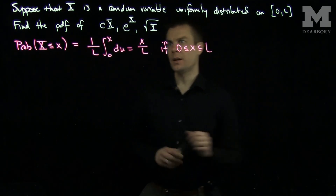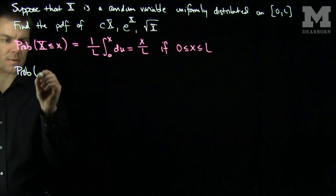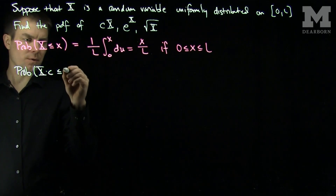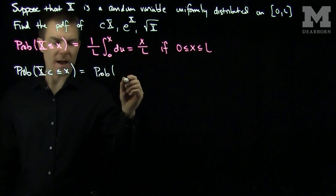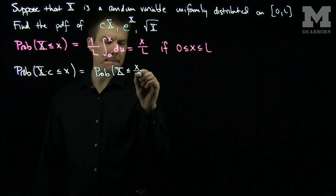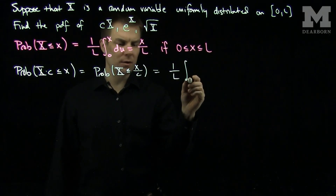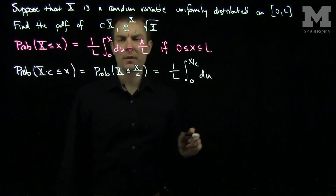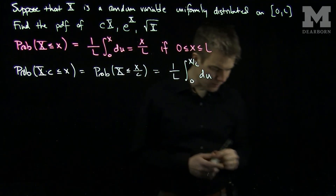So if we wish to find the PDF of c times X, the probability that X times the constant c is less than or equal to x is the probability that X is less than or equal to x over c, which is 1 over L times the integral from 0 to x over c of du. We wish to see an x in the top limit of integration, so we make a change of variables here.